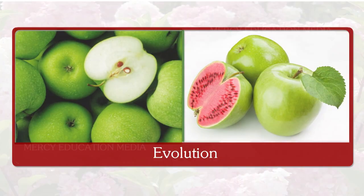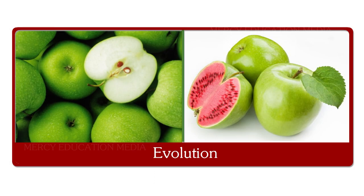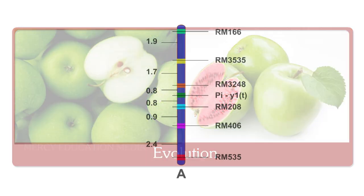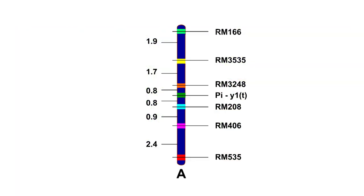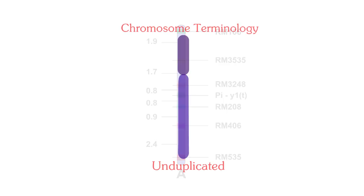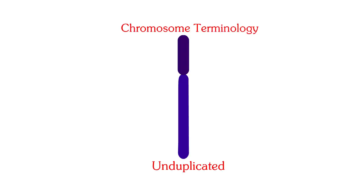It plays an important role in the process of evolution. The crossing over frequency helps in the construction of genetic maps of the chromosomes. It gives us evidence for the linear arrangement of linked genes in a chromosome.